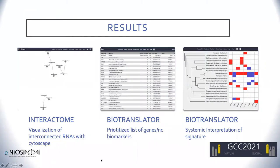On the next slide, I'm showing you some of the results that the workflow can generate. On the left, you can see a visualization in Cytoscape of a part of our interactome. In the middle, you can see the prioritized list that BionTranslator can generate, and this list can be further used to stratify patients from TCGA, which is a cohort, and we offer a tool just for that. And on the right, you can see the systemic interpretation of our signature, again done by BionTranslator.